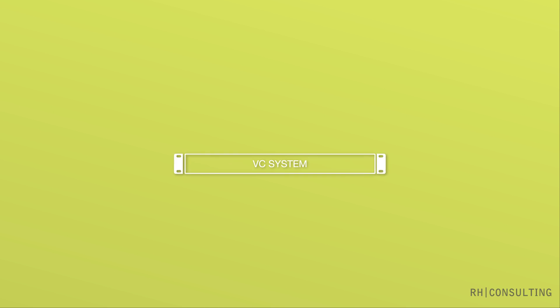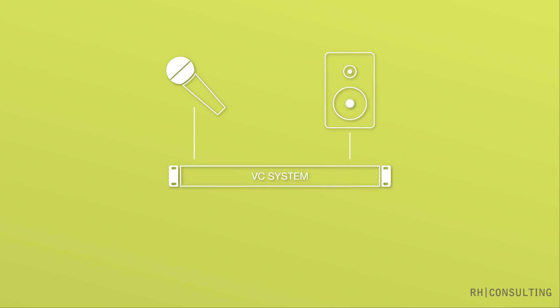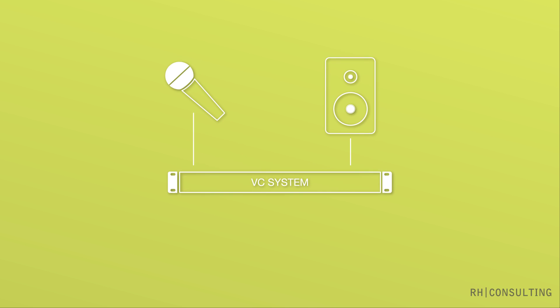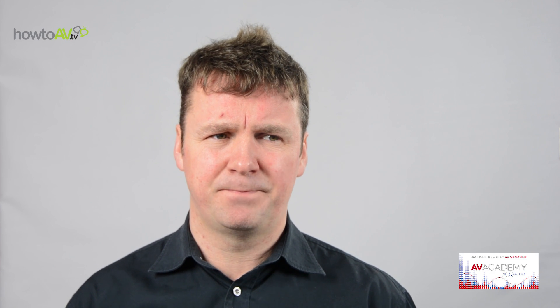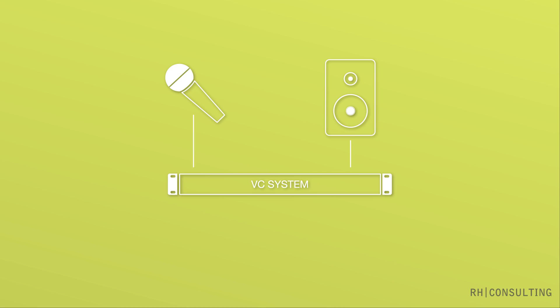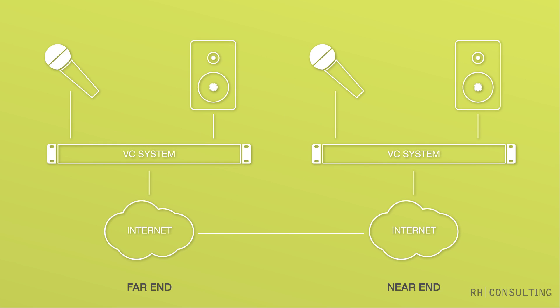One of the most common things in a conference audio system is a connection for video conferencing. In general you'll have a video conferencing codec and that will have one audio input and one audio output. In a standard meeting room you'll get audio from the far end and play this out of your room loudspeakers. In turn you'll send a mix of your room microphones to the far end.